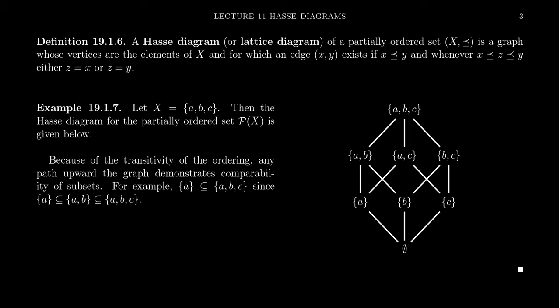When I say there's a path, it must always be an upward-traveling path. For example, the empty set is a subset of the whole set because there's an upward path going there. On the other hand, I can't do something like: {b} goes to {a,b}, {a,b} goes to {a,b,c}, and then goes to {a,c} — that would not say that {a,c} is a superset of {b}, because all paths must be going upwards. A downward trajectory at any point means that type of path doesn't count. That's not what we mean by the transitivity property.